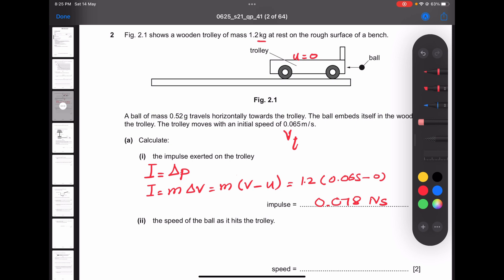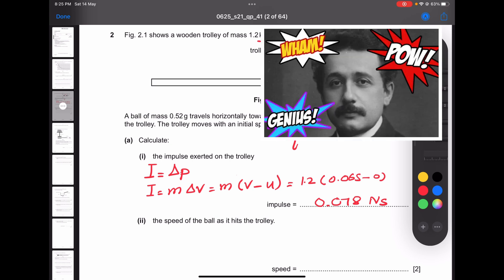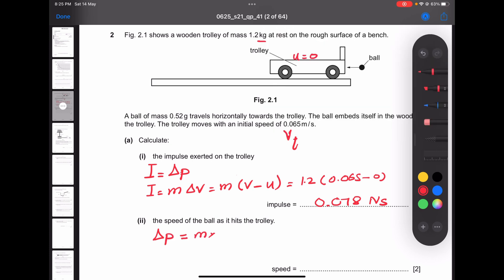So the change in momentum, I or delta p, equals m times v, the mass of the ball and the velocity of the ball. The impulse from the previous point, I equals 0.078, equals the mass of the ball 0.52, but it's given in grams so convert to kilograms, times 10 to the power minus 3, times v which is unknown.